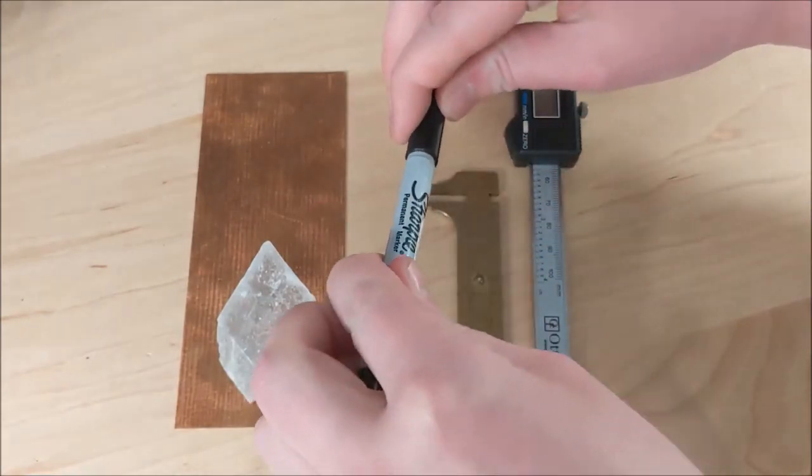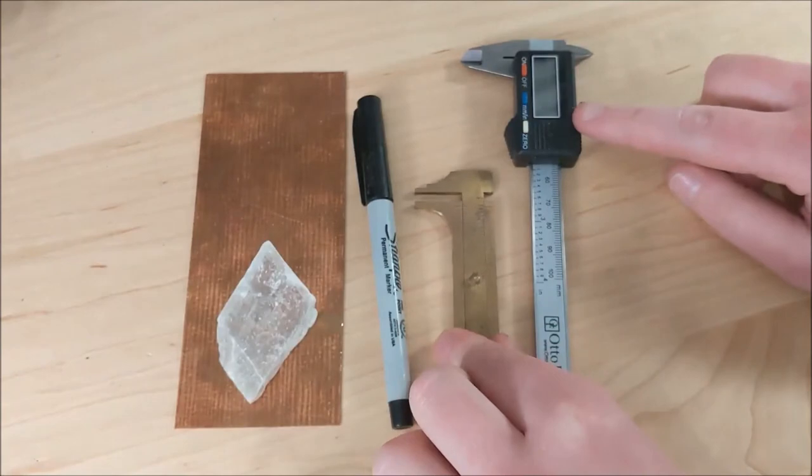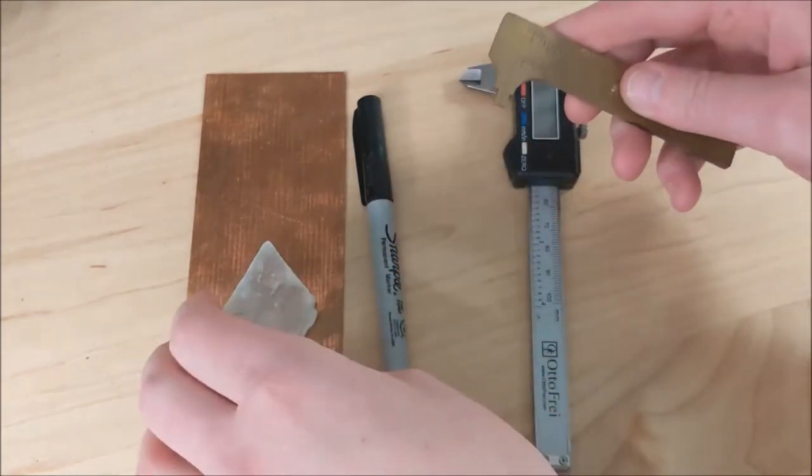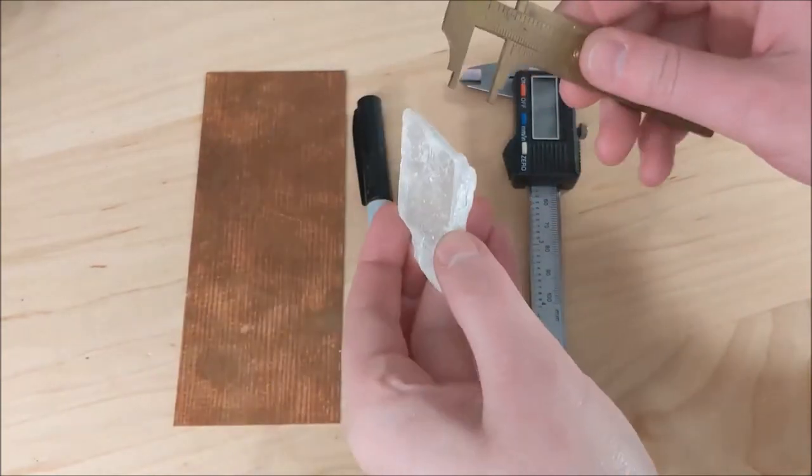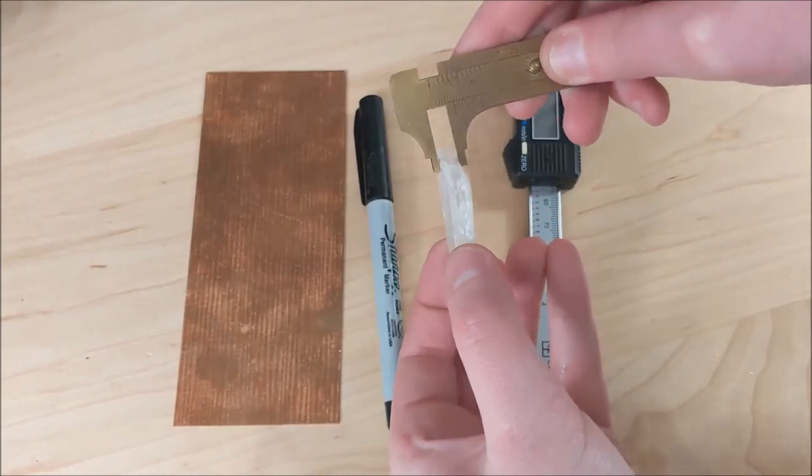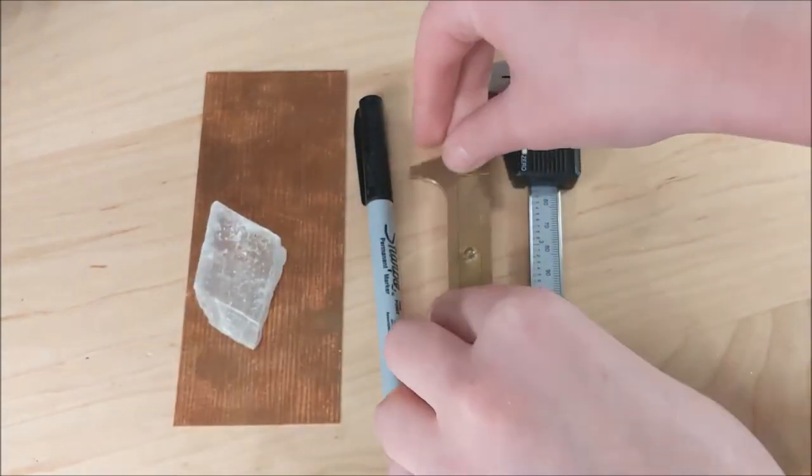And then I have here, besides my Sharpie marker, two sets of calipers. These are analog. This is digital. It doesn't matter which kind you have, but you're going to be using this to help you determine how big or long you want your tabs to be. So all these tools are necessary. Make sure you round them up.